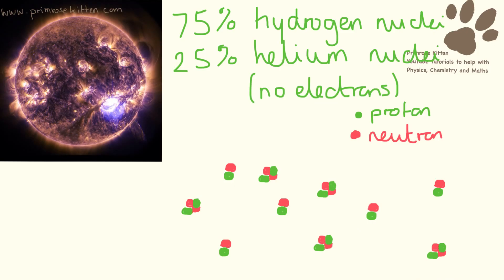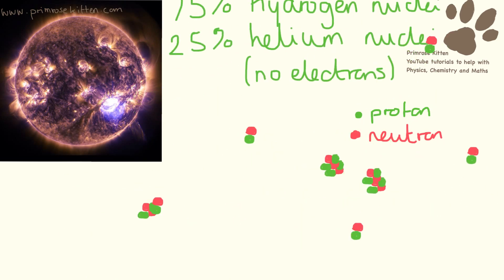Our sun is made up of about 75% hydrogen nuclei and about 25% helium nuclei. These are just nuclei, no electrons, and they are whizzing around like crazy all over the place. Every so often, some of these nuclei are going to hit each other, and this is when nuclear fusion takes place.